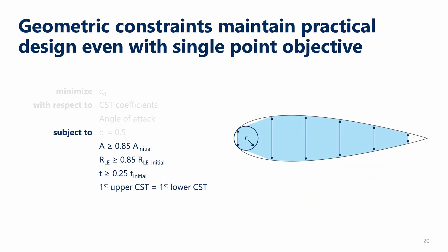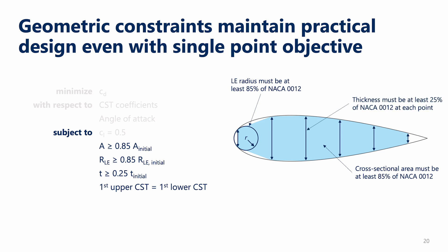For the geometric constraints, we enforce an area that's at least 85% of the initial NACA 0012 geometry. We enforce a similar constraint for the leading edge radius, which maintains adequate off-design performance. We also add a thickness constraint that keeps the thickness over 25% of the initial geometry — this is particularly important near the trailing edge where the optimizer really likes to thin out the design. Lastly, we enforce that the two first CST coefficients are the same to avoid the kink shown on the previous slide.